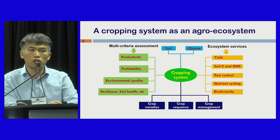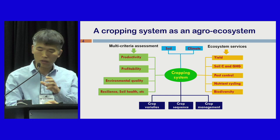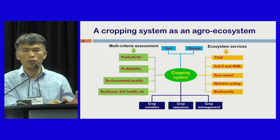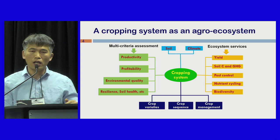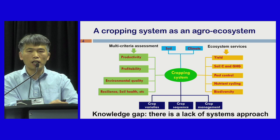Cropping Systems are intensively managed agro-ecosystems. They provide ecosystem services such as yield, nutrients, nutrient cycling, pest control, and others. The value of these services provided by Cropping Systems largely depends on the interaction between the Cropping Systems and surrounding environments. Because of this complexity, we need to use multiple system indicators to assess Cropping Systems. Unfortunately, there is a lack of knowledge in terms of assessing Cropping Systems using a systems approach.